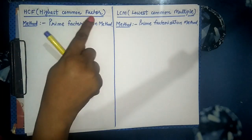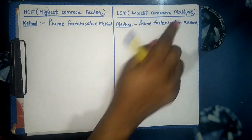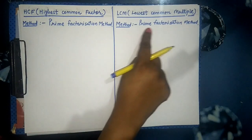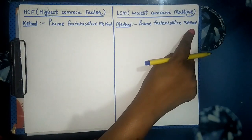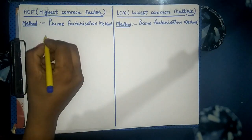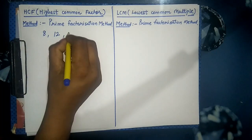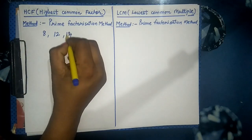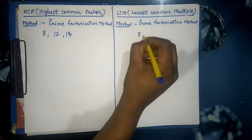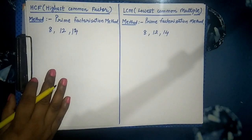HCF means Highest Common Factor and LCM means Lowest Common Multiple. Here I will tell you a single method — the prime factorization method — that can be used to find out both HCF and LCM. In this method we are going to use only prime factors to divide the given numbers, and on the basis of those prime factors we will find out the HCF and LCM.